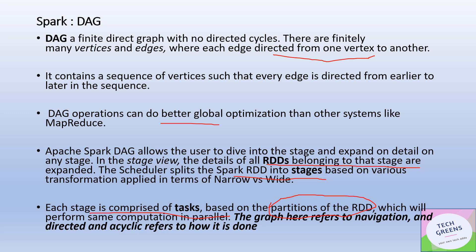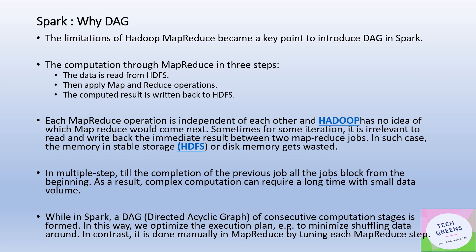The DAG refers to the navigation — directed and acyclic refers to how the entire computation is done. Essentially, DAG is a blueprint to the Spark engine, based on which the computation on the underlying RDDs is performed.